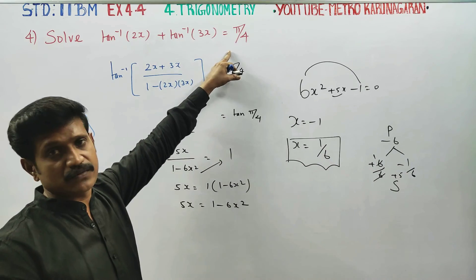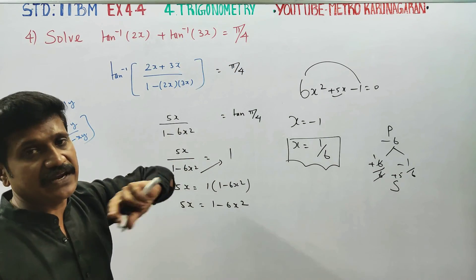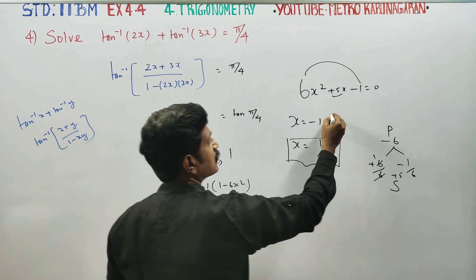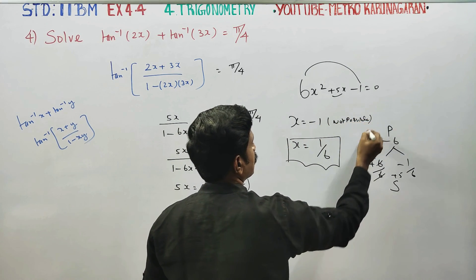Checking the domain restrictions, we can see that negative values are not possible in this context for tan inverse. Therefore, the x value is 1 by 6. Thank you.